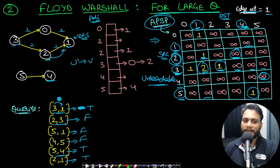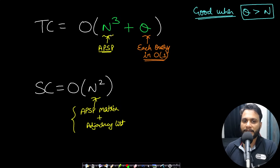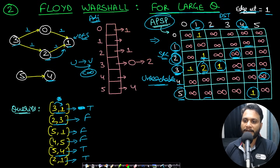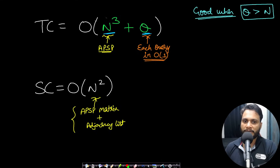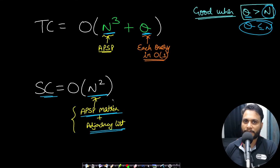If you can find all-pairs shortest path, then if there is a path between u and v, the shortest path will be less than infinity — that is the core idea. Floyd-Warshall takes O(n³) time, and each query is a simple O(1) matrix lookup. This approach is best for high numbers of queries. Space complexity is O(n²) for the APSP matrix plus O(n²) for the adjacency list.